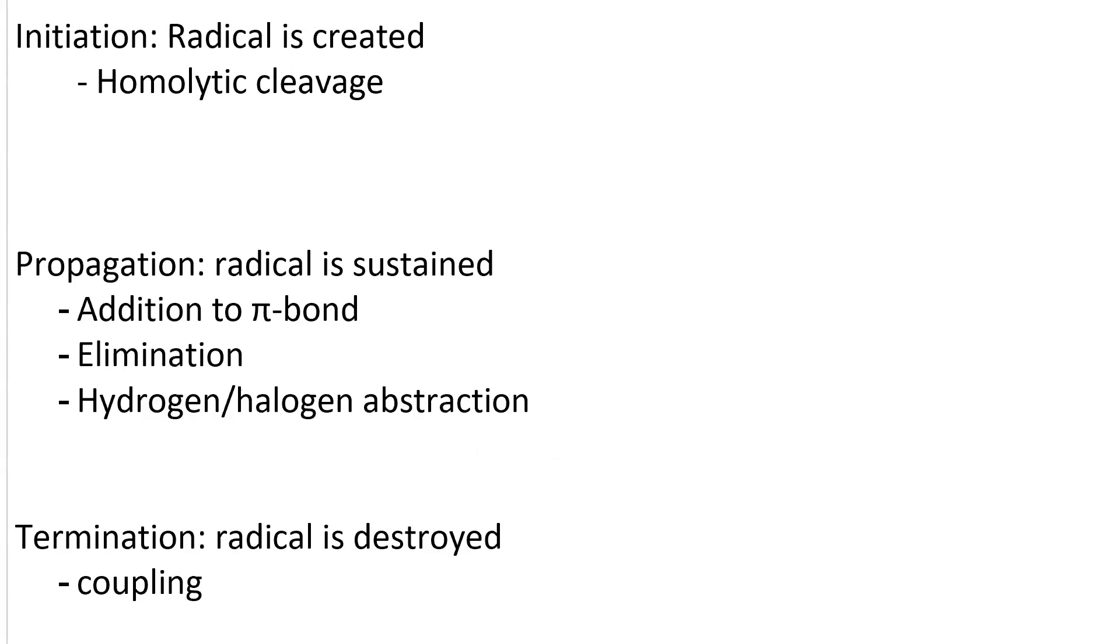We can categorize all of these patterns into three different categories. Initiation is the category where a radical is created. The only pattern that does this is homolytic cleavage. In propagation steps, you start with a free radical, and you end with a free radical. The three patterns that are propagation are addition to a pi bond, elimination, and hydrogen and halogen abstraction. Actually, that's four patterns. Termination is where the radical is destroyed, and the only example of termination is coupling.